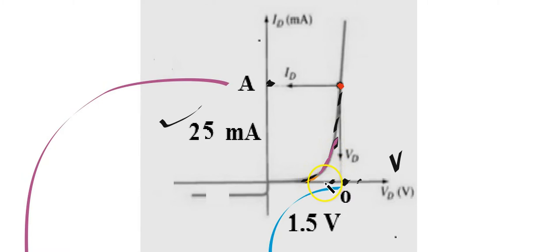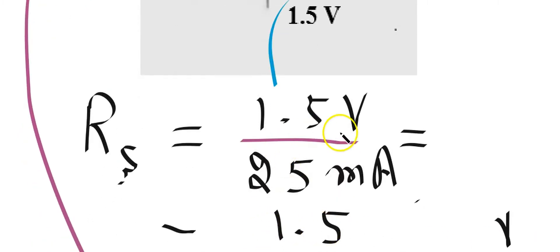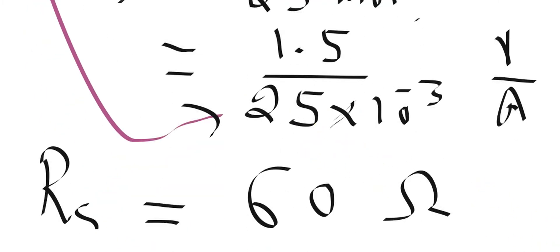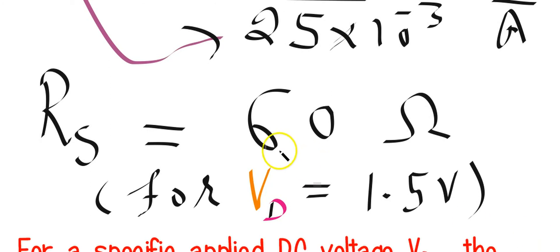So if we are finding the resistance at different points along the curve, it will be different at each point. We need to specify the particular point where we are finding it. At a specific DC voltage, for example the resistance is 1.5 volts over the current at that voltage. The static resistance comes out to 60 ohms.